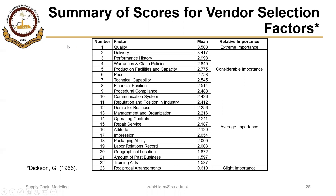This is a survey performed in 1966 where 23 factors considered in selecting suppliers were surveyed. In this survey, quality was found to be the most important factor, followed by delivery reliability, then performance history, warranties and claim policies, production facilities and capacities, price, and so on.